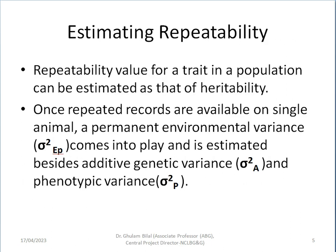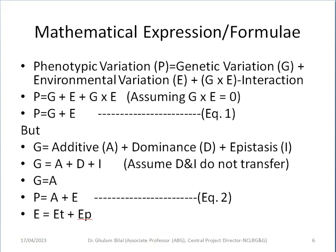From this, we can figure out whether a trait is going to repeat its performance or not. Now, how can we estimate repeatability? It is not very different from heritability. Repeatability of a trait can be estimated on the patterns of heritability. Once repeated records are available on a single animal, a permanent environmental variance comes into play — sigma square EP — and is estimated besides additive genetic variance and phenotypic variance. So one more variance component we need to add, which is permanent environmental variance.